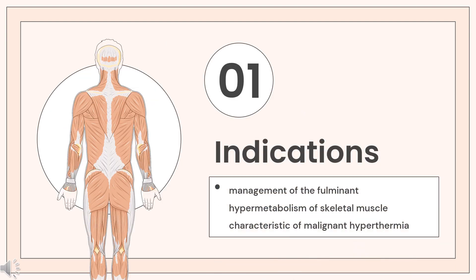Dantrolene is used, along with appropriate supportive measures, for the management of the fulminant hypermetabolism of skeletal muscle characteristic of malignant hyperthermia crises in patients of all ages. It is also used preoperatively, and sometimes postoperatively, to prevent or attenuate the development of clinical and laboratory signs of malignant hyperthermia in individuals judged to be malignant hyperthermia susceptible.